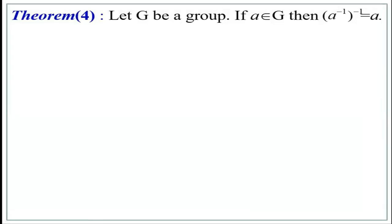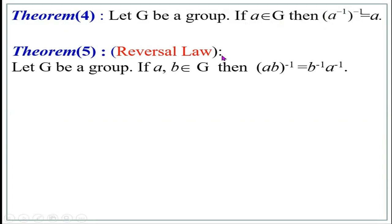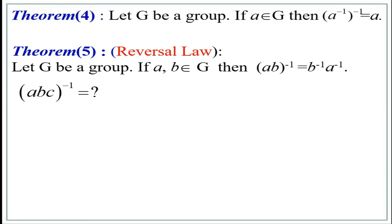The next statement: let G be a group; if A belongs to G, then (A inverse) inverse equals A — that is, the inverse of the inverse of an element is the element itself. The fifth property is known as the reversal law: if A, B belong to G, then (AB) inverse equals B inverse times A inverse. Note that the elements are reversed. For three elements: (A circle B circle C) inverse equals C inverse circle B inverse circle A inverse.